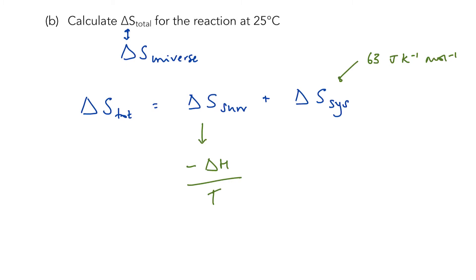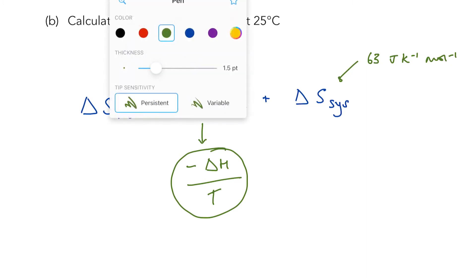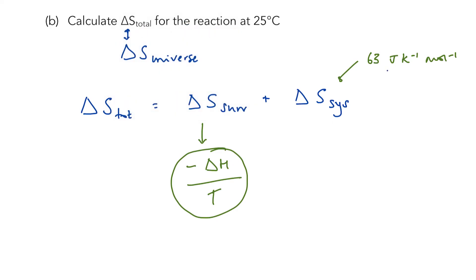Pay close attention: if you don't know where these equations come from — if you couldn't explain why ΔS_surroundings is minus ΔH over T, why it's divided by temperature, where the ΔH comes from — you need to go back and watch the first video in the entropy series. It's all very well learning equations from textbooks, but if you don't understand where they come from, in an exam when they ask about the significance of what you've calculated you'll come unstuck. Do not simply learn equations — you need to really understand where they come from.